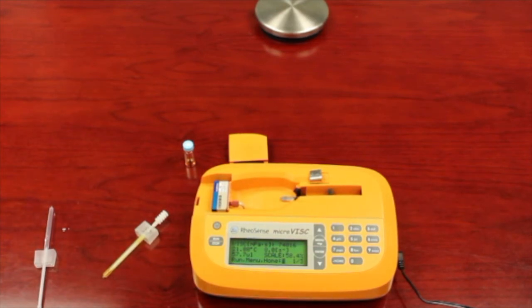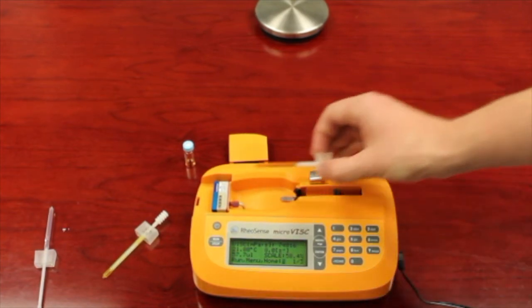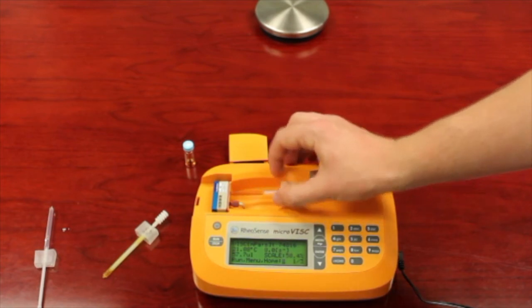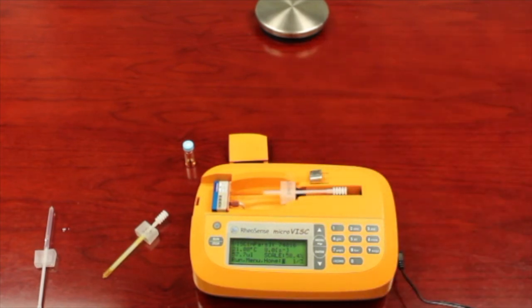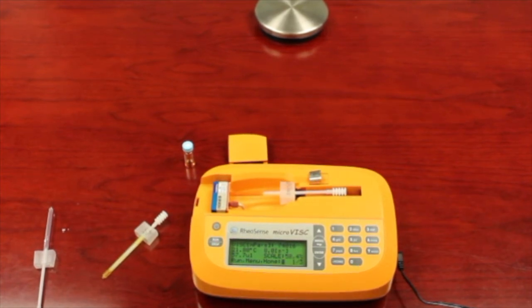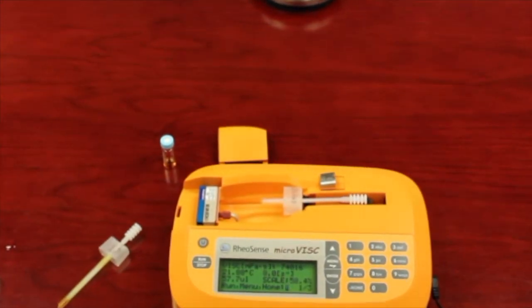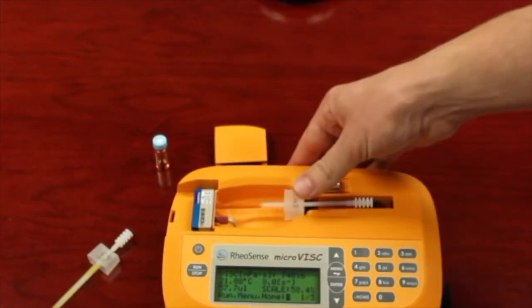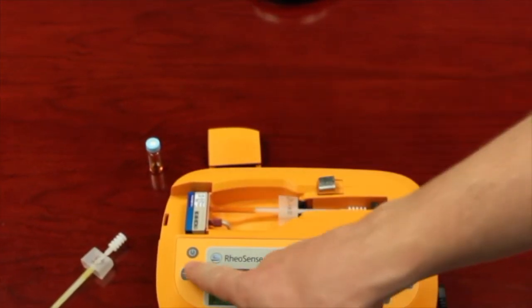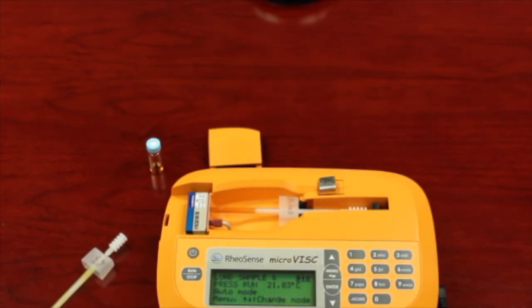And so terpenes tend to be much lower in viscosity than the raw material. And so it's critical to know and understand the viscosity of your beginning samples so that you can really dial in that formulation. This takes the guesswork out of how you make your products.